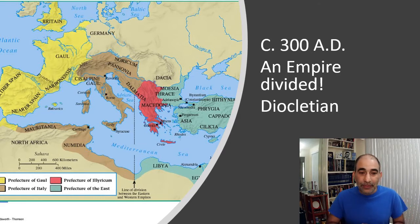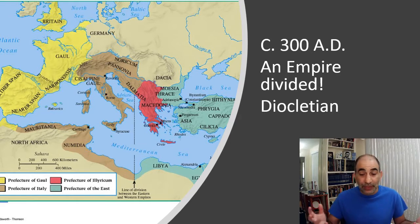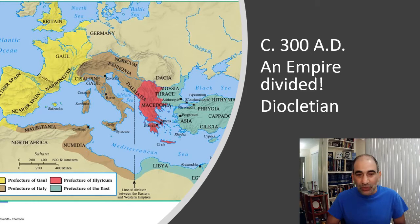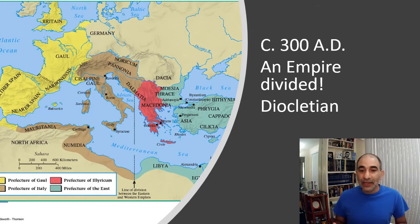Also developing during this period is Christianity. Around 300 AD, the Christian faith had been around for about 300 years but was still being persecuted. During Diocletian's time, if you were a Christian and came out publicly, it would not be a good time for you. This is the backdrop against which Constantine's story unfolds.